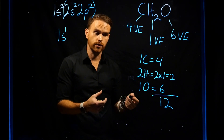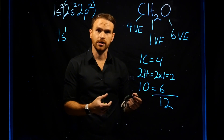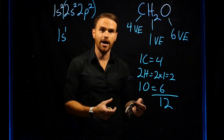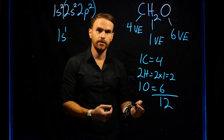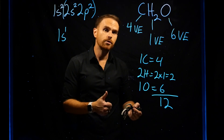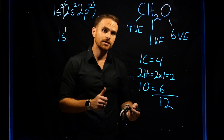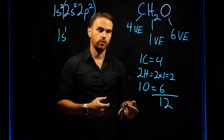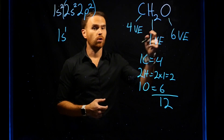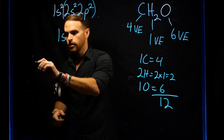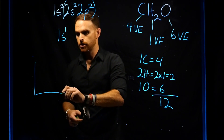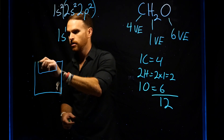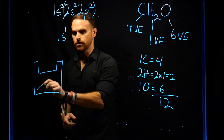The next step to creating Lewis structures is to place the least electronegative atom in the center of the molecule. Keep in mind, though, that you never place hydrogen at the center of a molecule.